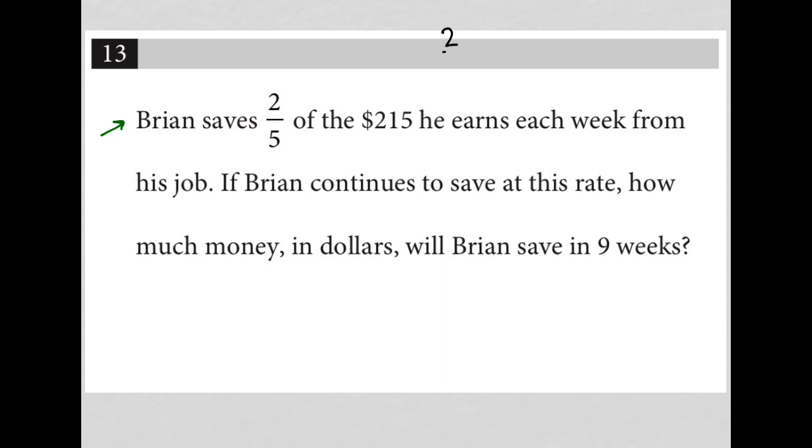So two-fifths of will always mean multiply, right? So of the 215 will be two-fifths of 215. I'm going to just take this in my calculator. I can see, first of all, if I treat this as 215 over 1, this becomes 430 over 5.